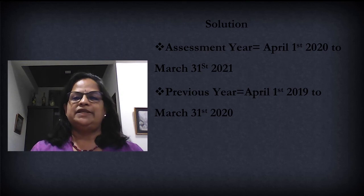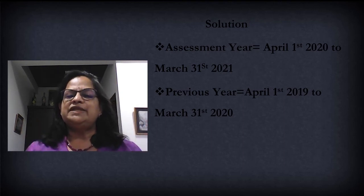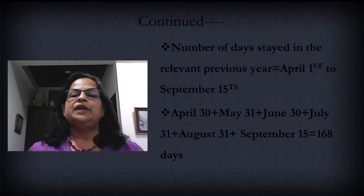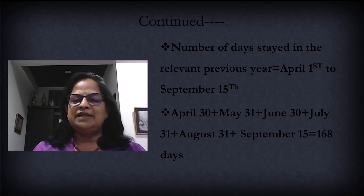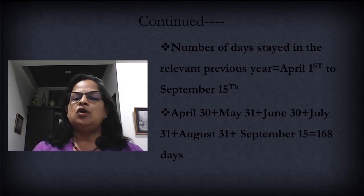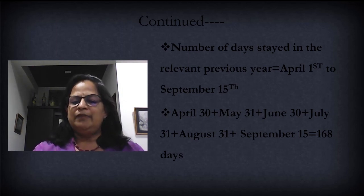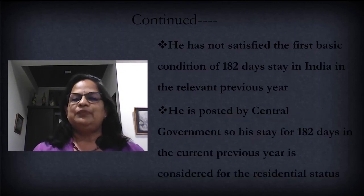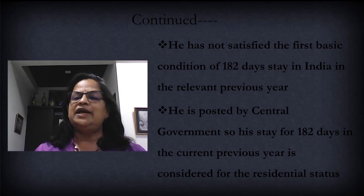As usual, write the assessment year and previous year. The number of days stayed in the relevant previous year: April 1st to September 15th. April is 30 days, May 31, June 30, July 31, August 31, and September 15 — totally you are getting 168 days. The first basic condition is 182 days, so he has not satisfied the first basic condition of 182 days stay in India in the relevant previous year.